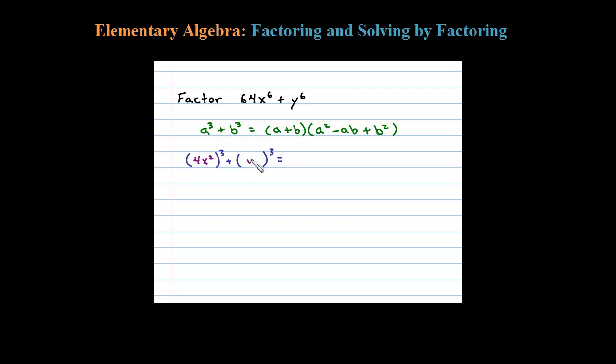What cubed is y to the sixth? Well, y squared—remember power to power you multiply, so 2 times 3 is y to the sixth. For the formula here, a is 4x squared and b is y squared.